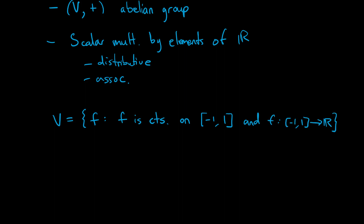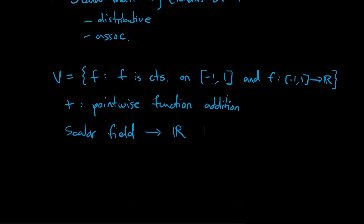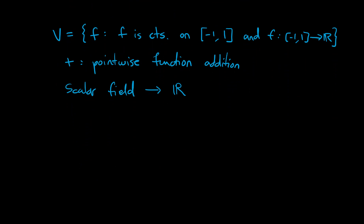These functions cannot be drawn as arrows. But with V together with pointwise function addition, we can see that V will form a vector space where the scalar field is R. So this is a vector space. But can we draw these things as arrows? No, we cannot. However, we can pretend as if they are and assign magnitudes to them and find the angles between them. How are we going to do that?